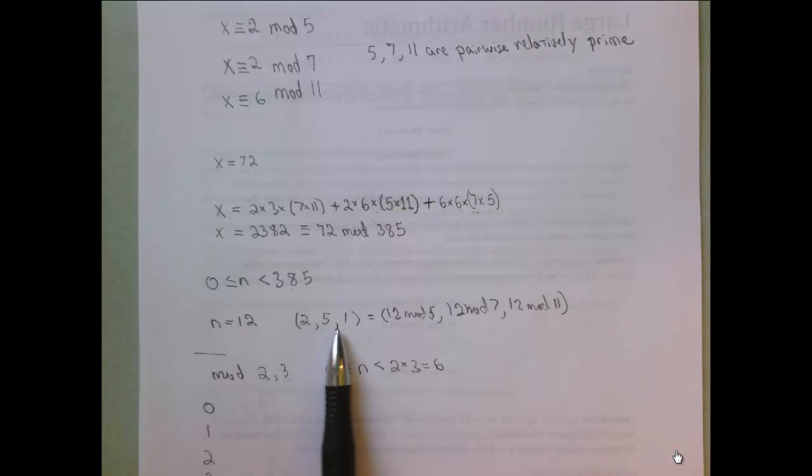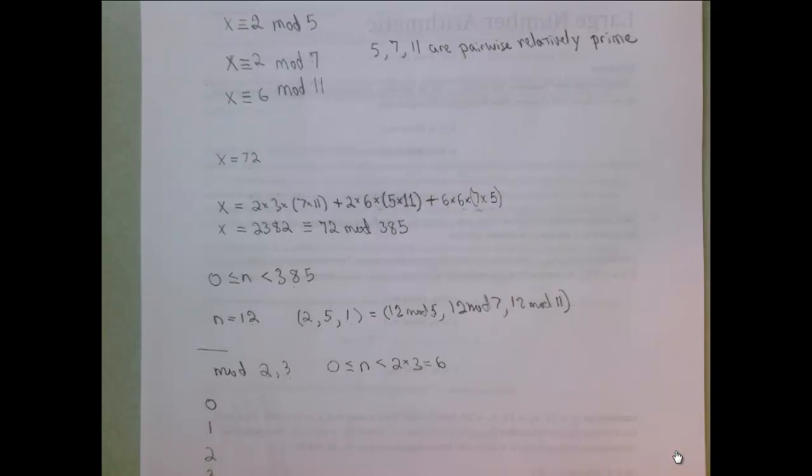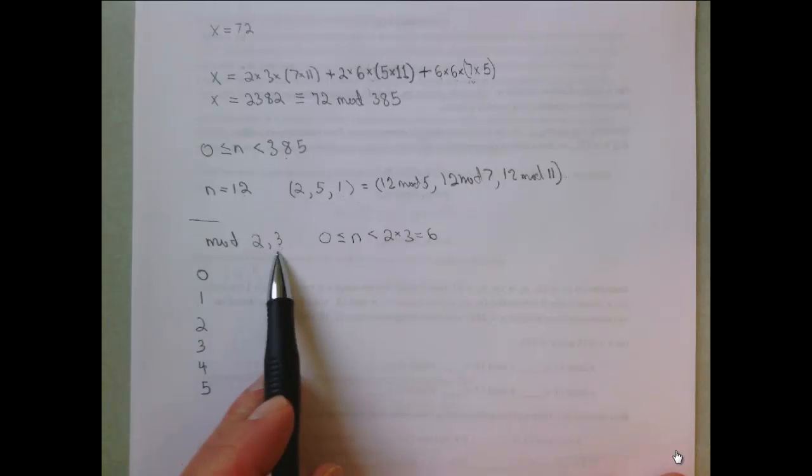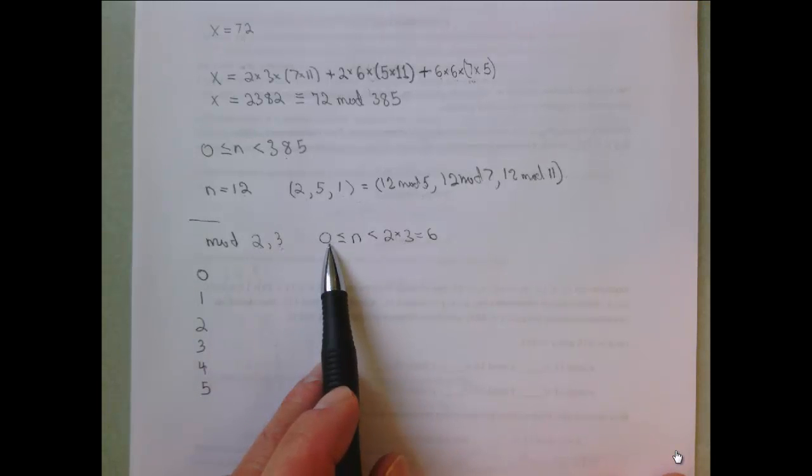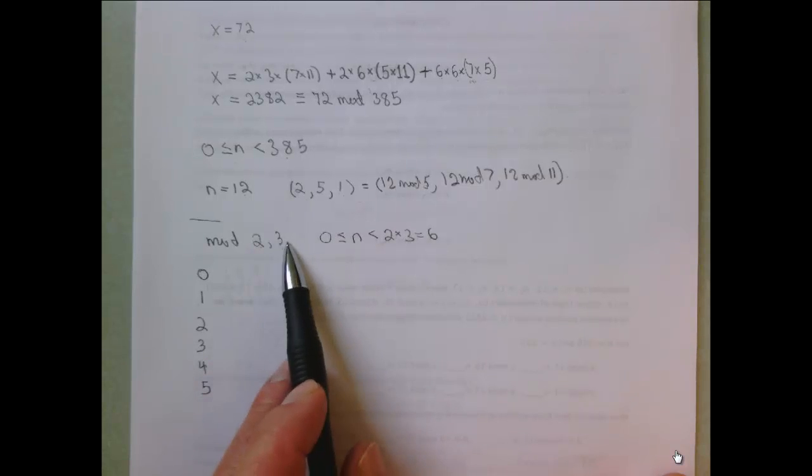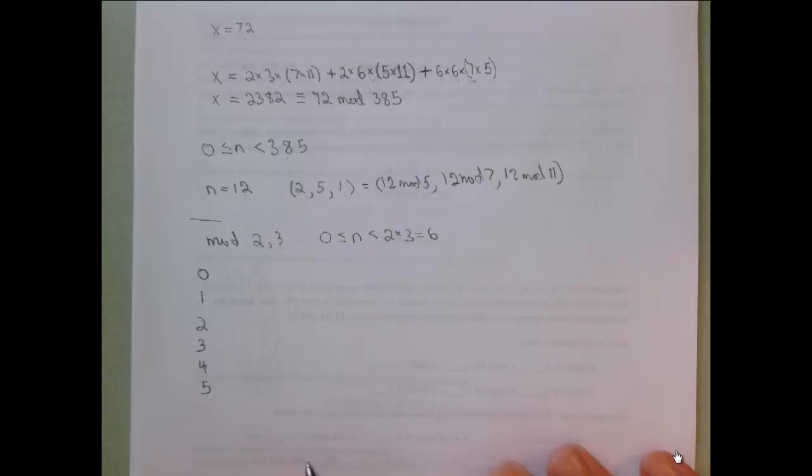That would be hard to verify just by computation in this case because we have 385 different numbers. However, we could verify it for a much simpler example. Let's suppose that our two moduli were 2 and 3. Of all the integers in the range from 0 up to but not including 6, when we divide by 2 and 3 in that order, we must get a pair of remainders that's unique. Let's give it a try and see what happens.